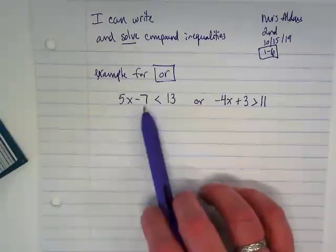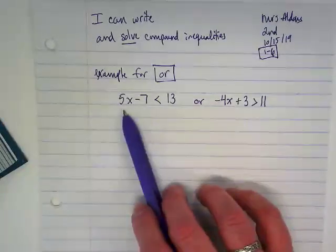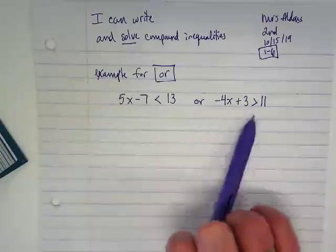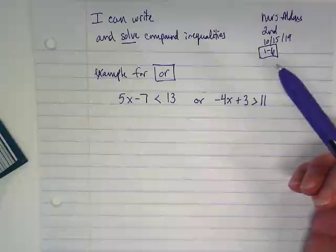Okay, we're going to get rid of the 7. When we're solving for an or inequality, we want to solve both inequalities on their own, and then we just graph the solutions together.